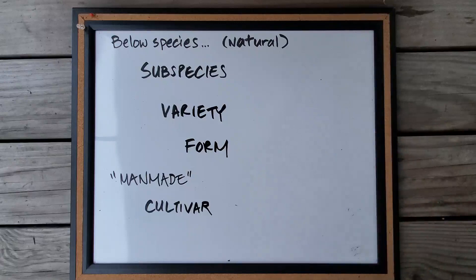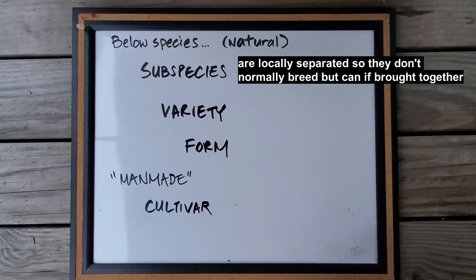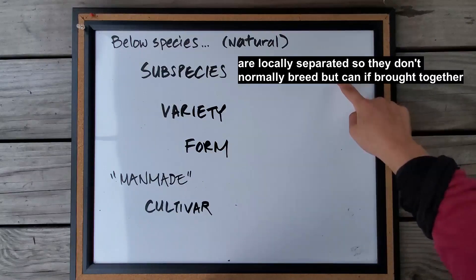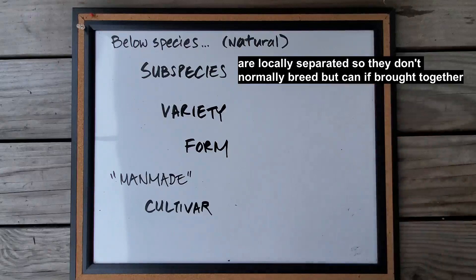As a disclaimer, even within taxonomy as a field there are a lot of arguments about how to divide or combine these categories, and the definitions are not completely clear. My best understanding is that a subspecies develops when a population becomes geographically isolated, and these isolated populations develop distinct characteristics. They don't normally mix, but if you bring them together they are able to breed.